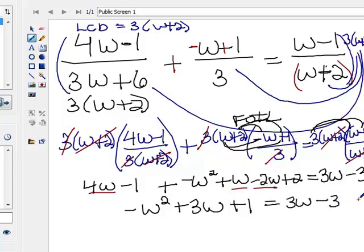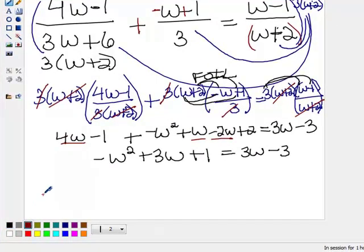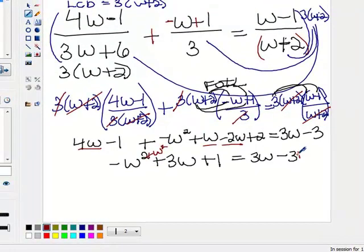So now, I notice that I have a squared term. So again, I need 0 on one side, and I need to factor. And I like to keep my things that are squared positive. So what I'm going to actually do is move everything from the left side to the right side. So I'll add w squared to both sides, and that will move this way.